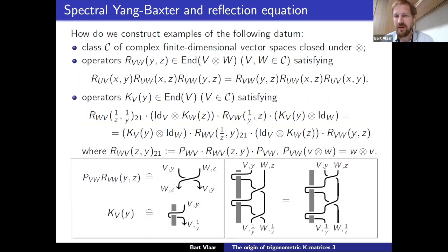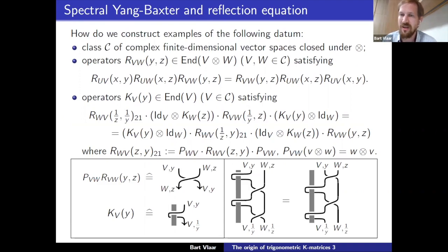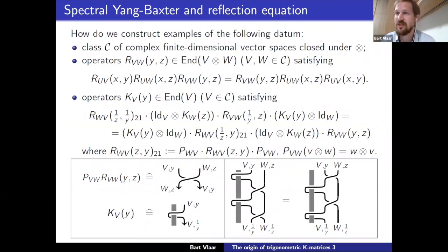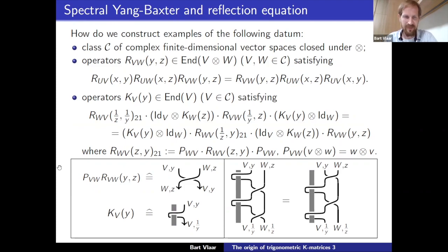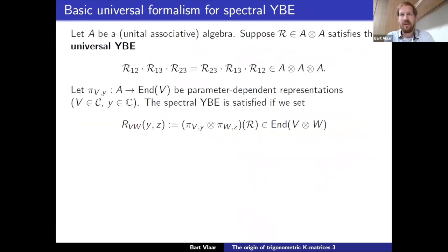Here are the pictures for the reflection equation. It's drawn in terms of strands near a vertical puncture and how they interact with this puncture. Turning the pictures into formulas using the identification on the left bottom, you get the reflection equation which appears in the work by Cherednik, Sklyanin, and many others from the 1980s onwards.